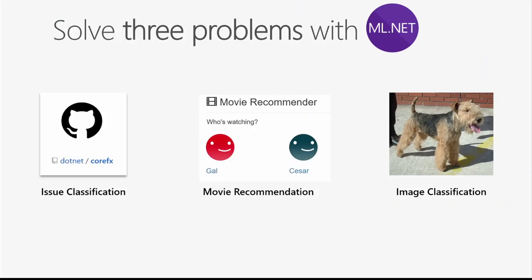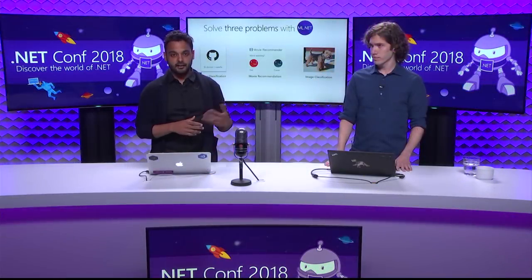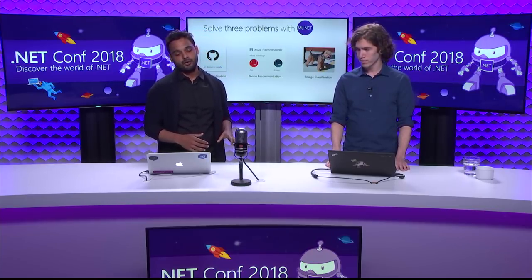The other two examples we'll cover are: how to build a movie recommender with ML.NET — a new feature added in ML.NET 0.3 — and then how to do image classification using deep learning with TensorFlow as part of the ML.NET 0.5 story.